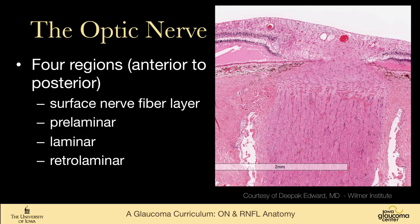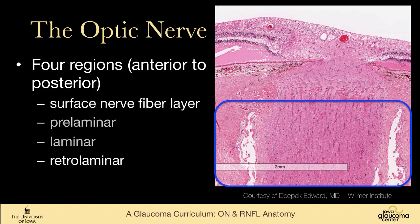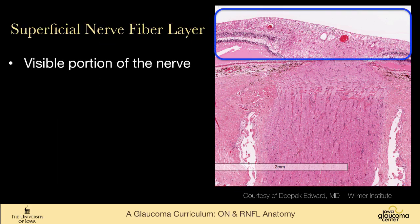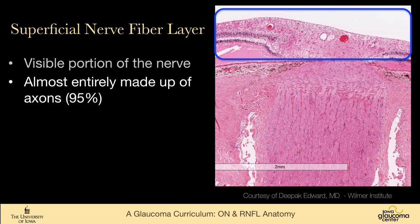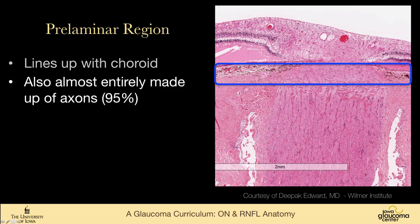If we look at the optic nerve in cross-section, there are four main regions. There's a surface nerve fiber layer that we can see. Just behind that is the prelaminar area, then the laminar, and then retrolaminar. The superficial nerve fiber layer is the visible portion of the nerve, almost entirely made up of axons with a few astrocytes. The prelaminar region is just below the surface layer and right above the laminar region, lining up with the choroid. It is also made up mostly of axons with a few astrocytes.